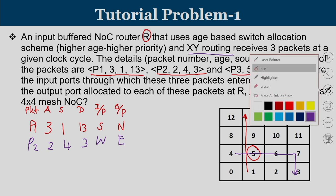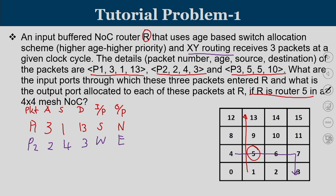For the third packet, P3, its age is 5 and it is traveling from router 5 to router 10. Router 5 is the current router, and this packet is locally injected — it's a newly created packet from router 5 coming through the local input port, and it also wants to go to the east output port.